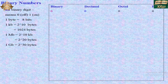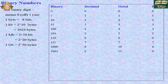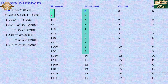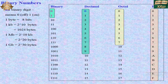Binary numbers contain only zero and one. Decimal numbers range from zero to nine. Octal numbers range from zero to seven. Hexadecimal numbers range from zero to six and also include alphabets. So these are the different number systems: binary uses 0 and 1, octal uses 0 to 7, and hexadecimal uses 0 to 6 plus alphabets.